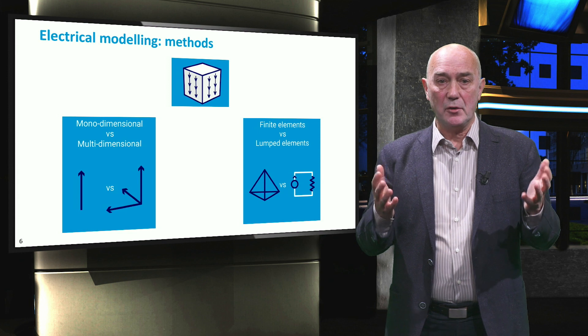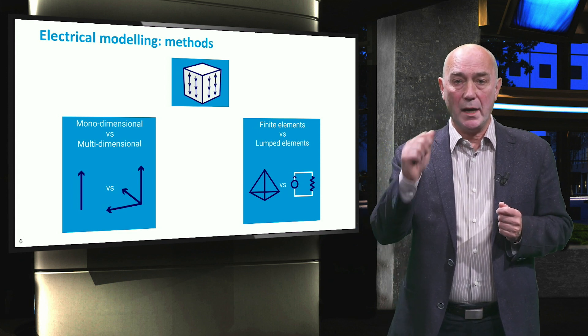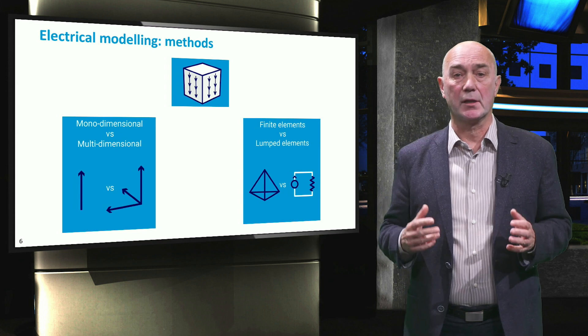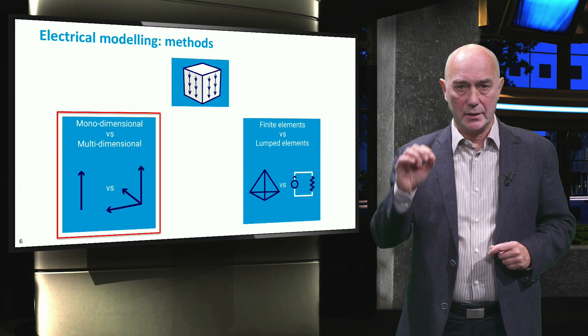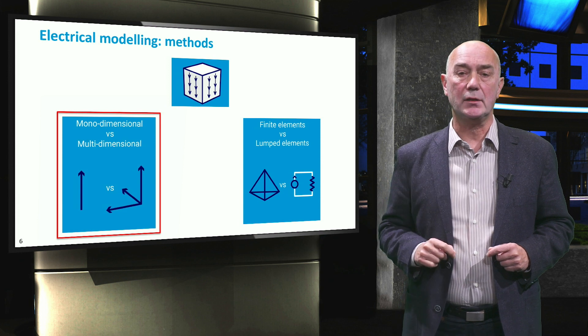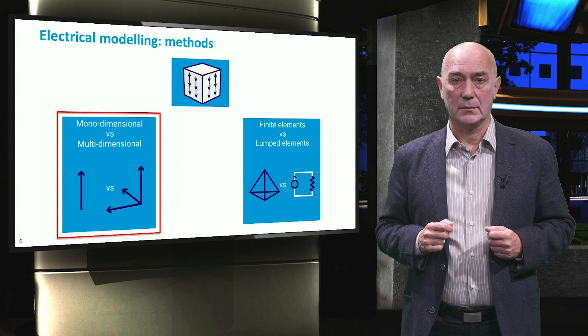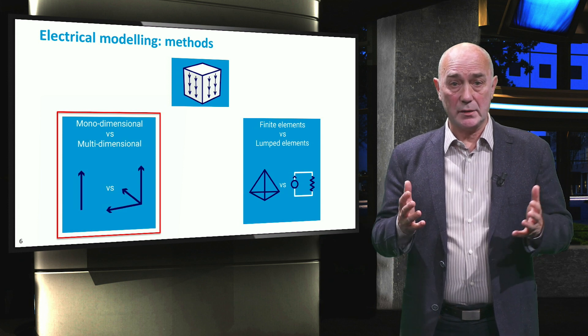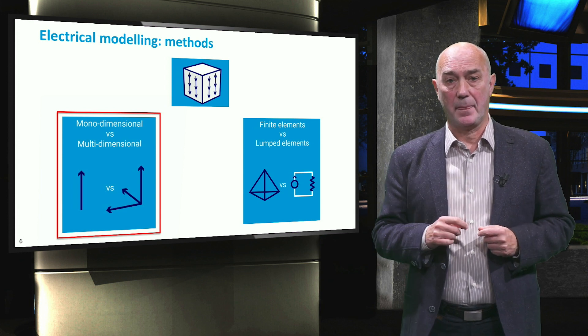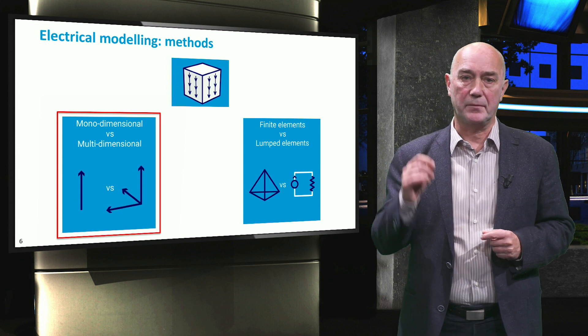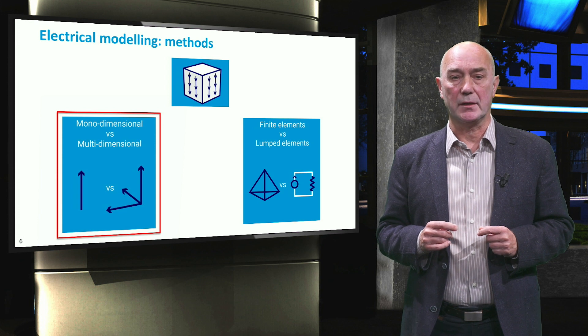When it comes to the geometrical description, one-dimensional or more complex two- or three-dimensional approaches can be selected. The choice depends on the material structure, interface morphology, and device architecture. One-dimensional models are in general simpler, but still effective enough to simulate solar cells with flat interfaces or randomly textured interfaces.